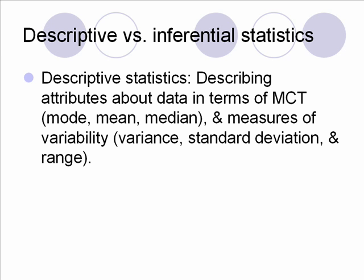Some other things about descriptive and inferential statistics. Descriptive statistics describe attributes about data in terms of the MCT, which stands for measures of central tendency. Those three measures are mode, mean, and median, and I'm going to talk about those more later in this lecture. Another thing that descriptive statistics measure or describe are measures of variability — we call that variance, standard deviation, and range. I'll get into that a little bit later in this lecture.